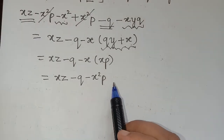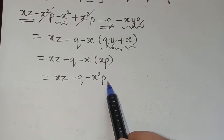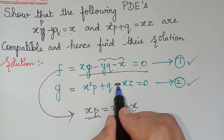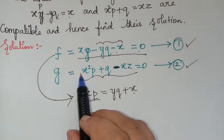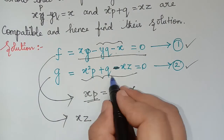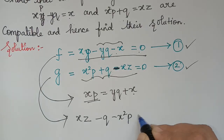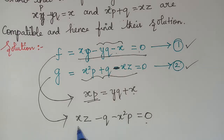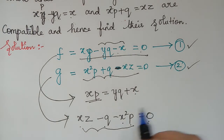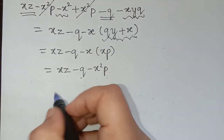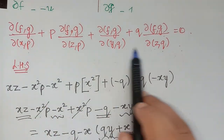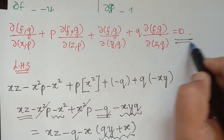Observing this, we can use equation 2. From g = x²p + q − xz = 0, multiplying throughout by −1 gives xz − q − x²p = 0. We observe that xz − q − x²p is exactly 0 by equation 2. So this term can be replaced as 0, and hence we have proved that the compatibility condition holds — the left-hand side equals 0.